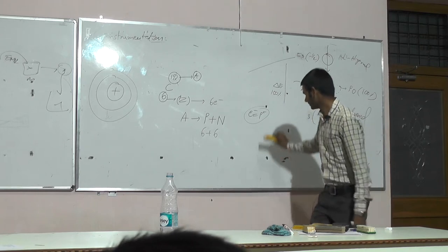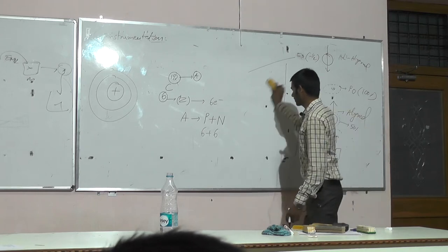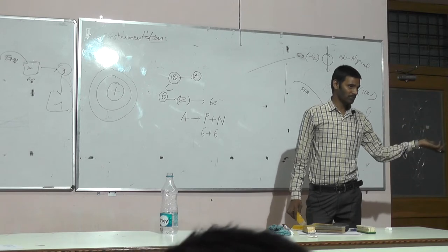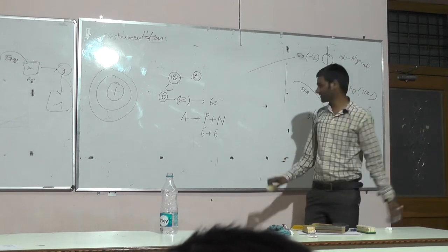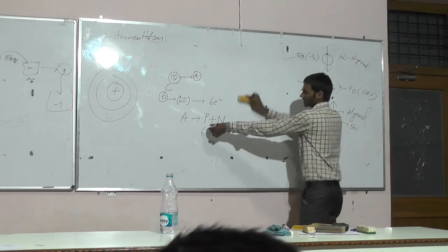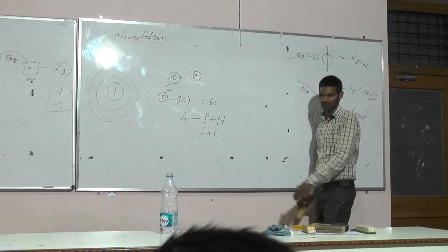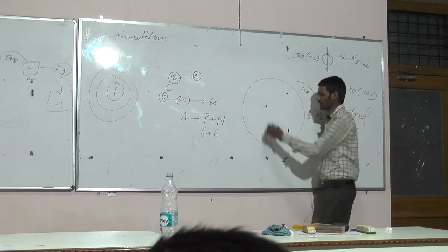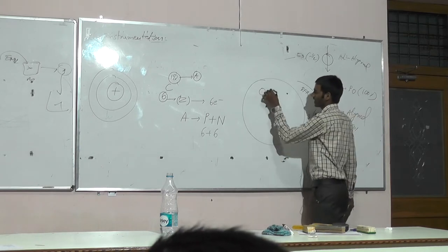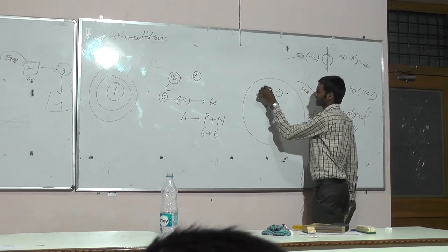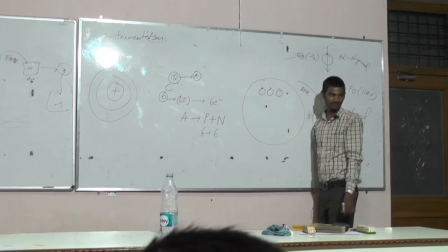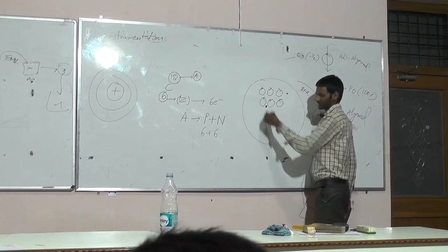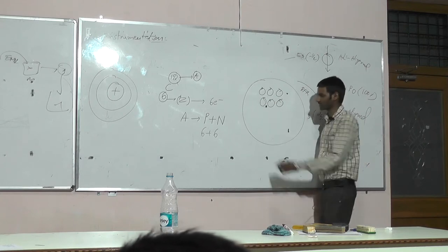Now we will see — just now I told you, a molecule having spinning properties may still not give NMR spectra. We will see why. Protons are 6. In the nucleus, protons and neutrons are there. 3 protons spinning clockwise direction, remaining 3 protons spinning anticlockwise direction. Protons are over.